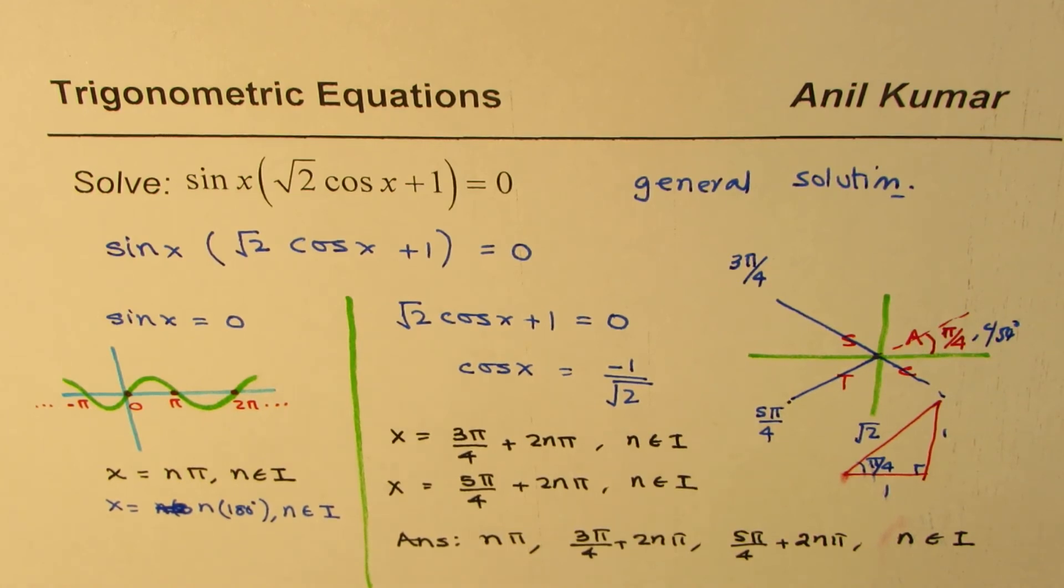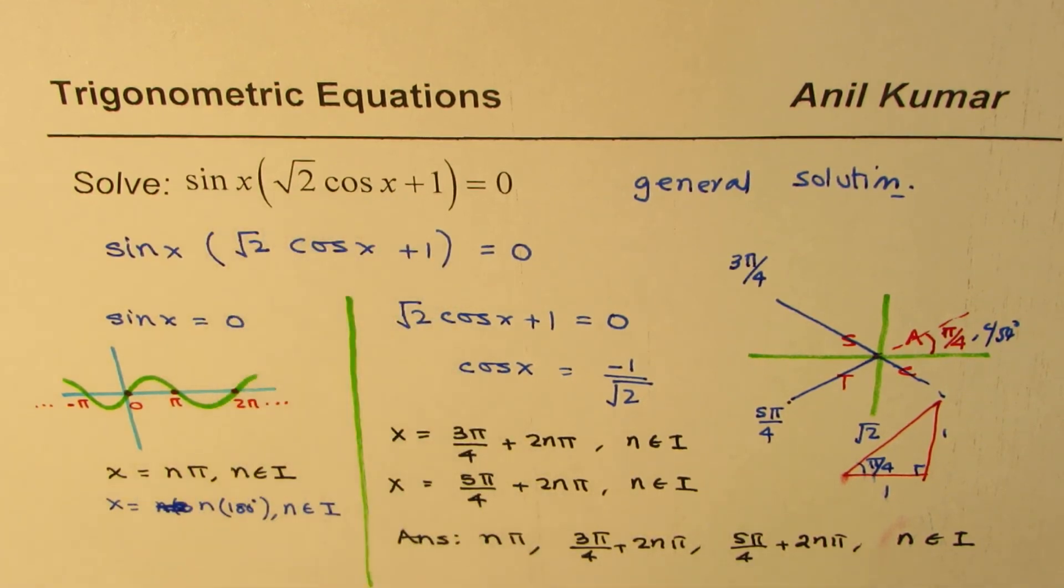So that is how you could write a general solution for the given factored form of trigonometric equations. Further, what we will do is we will take up quadratic trigonometric equations. We will factor them and then find the solution.